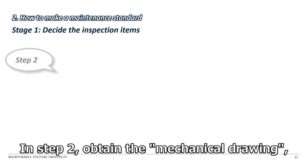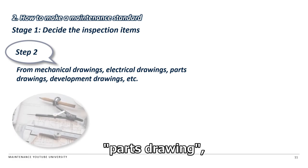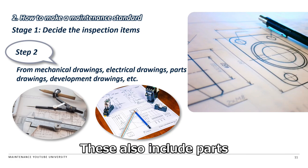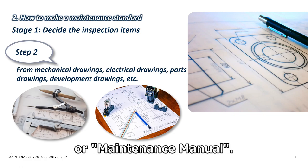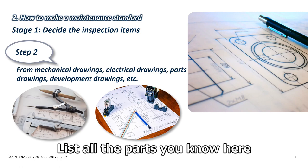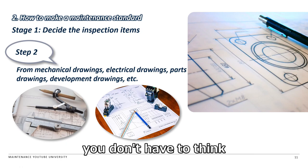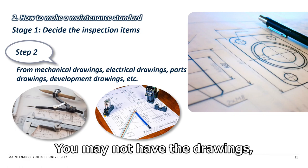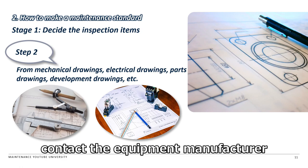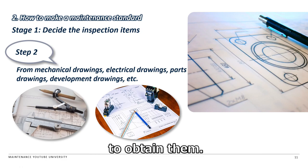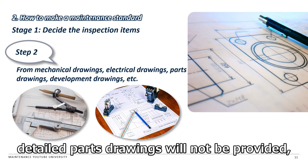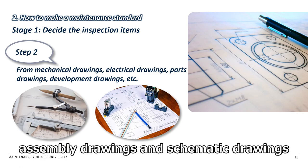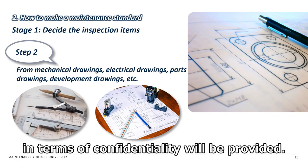In Step 2, obtain the mechanical drawings, electrical drawings, parts drawings, and development drawings of the target equipment. These also include parts that were not listed in the instruction manual or maintenance manual. At this stage, you don't have to think about whether these parts are really the parts to be inspected. You may not have the drawings, but in that case contact the equipment manufacturer to obtain them. In some cases, detailed parts drawings will not be provided, but in many cases, assembly drawings and schematic drawings that do not pose confidentiality problems will be provided.